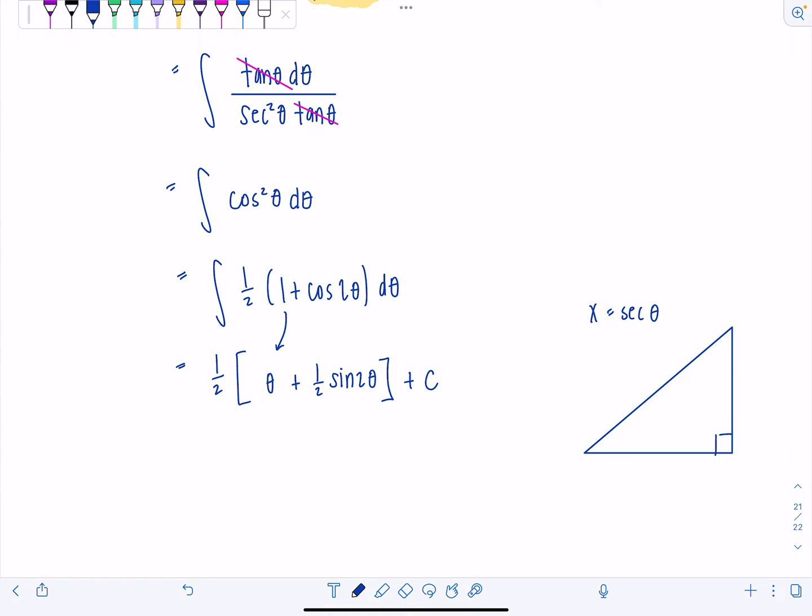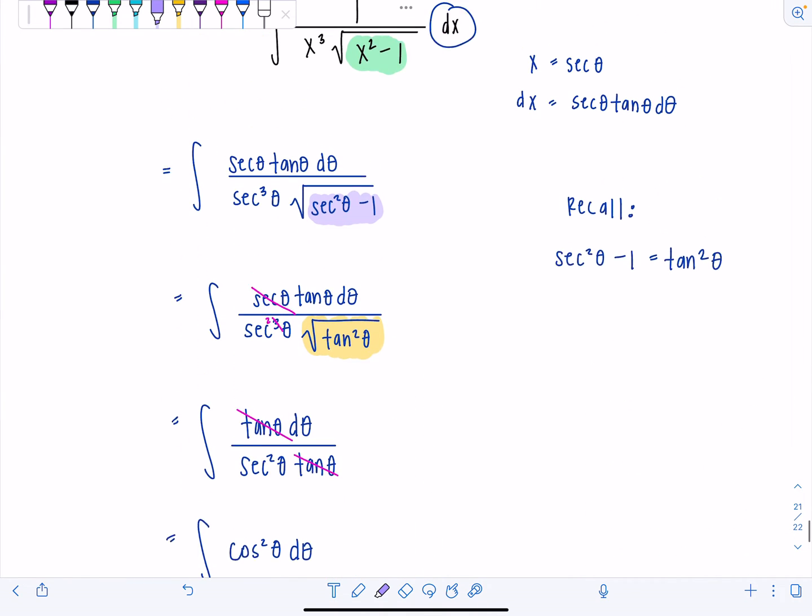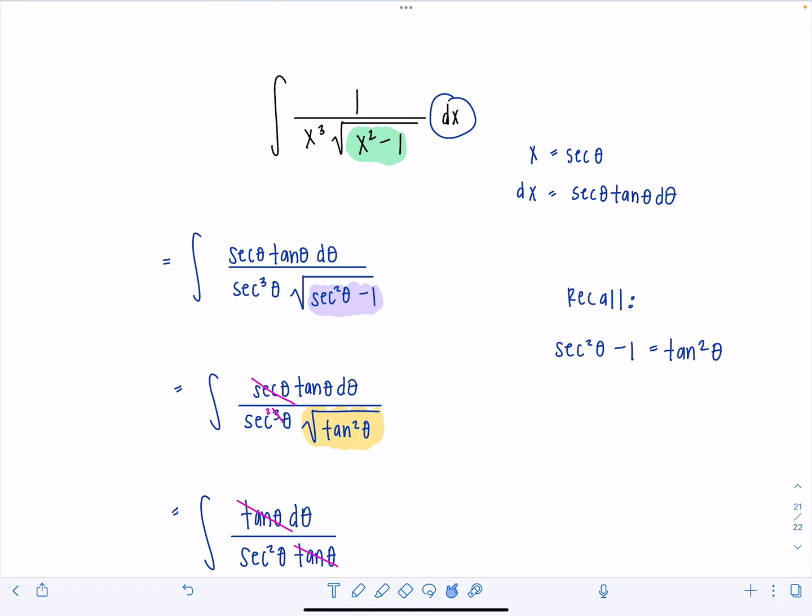So say this is theta. Secant is the ratio of hypotenuse over adjacent. So think of it like this. Then that missing side is rad x squared minus one, which is no surprise. You usually have this expression here, that missing side in the original integral. There it is. Voila. See?